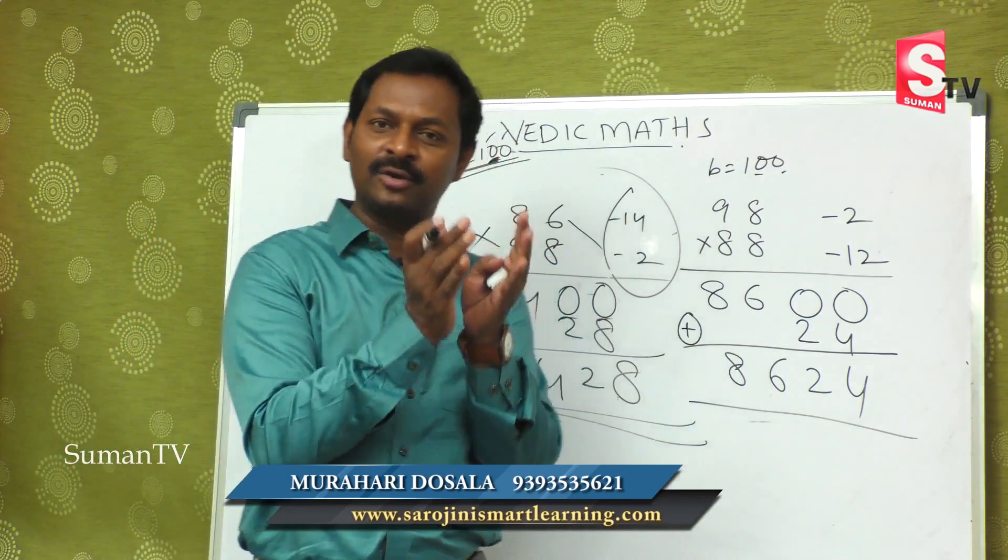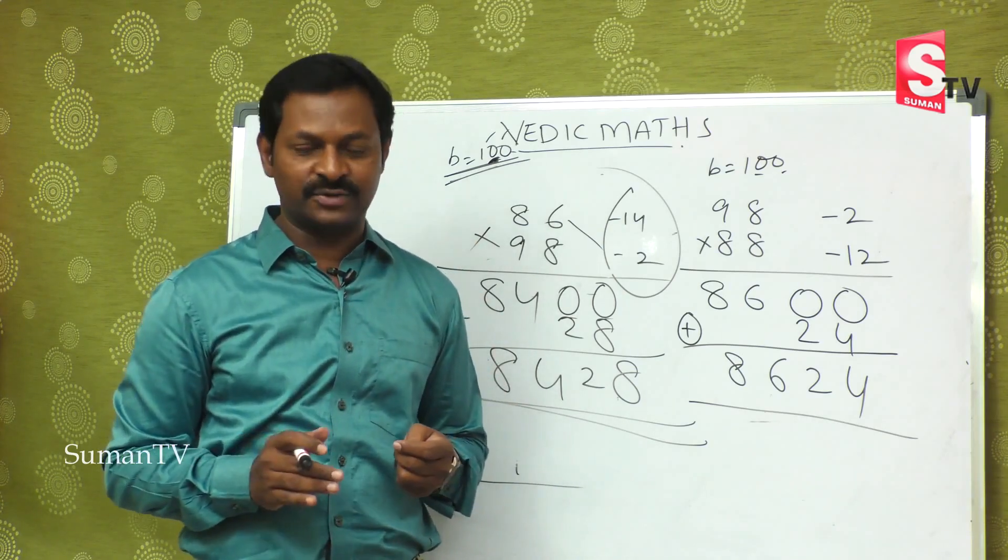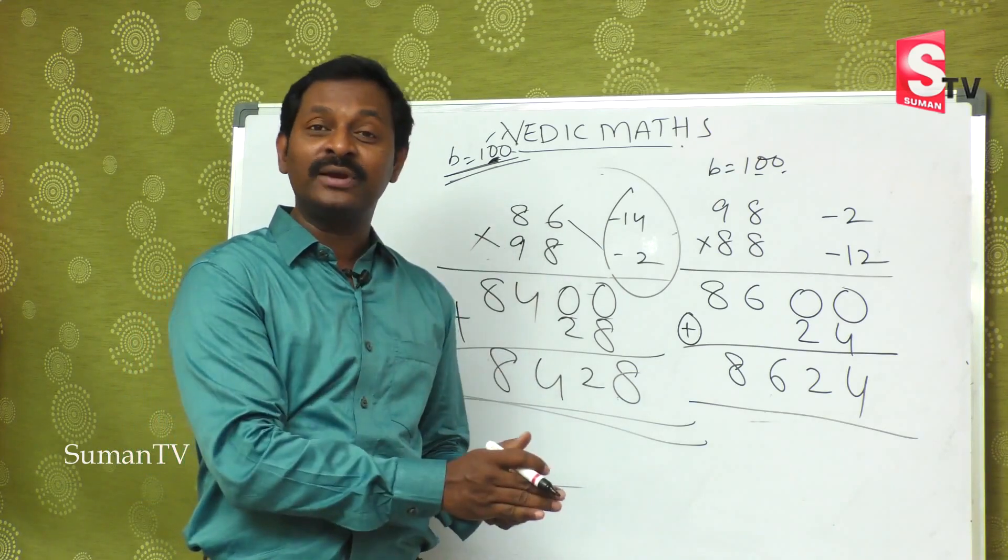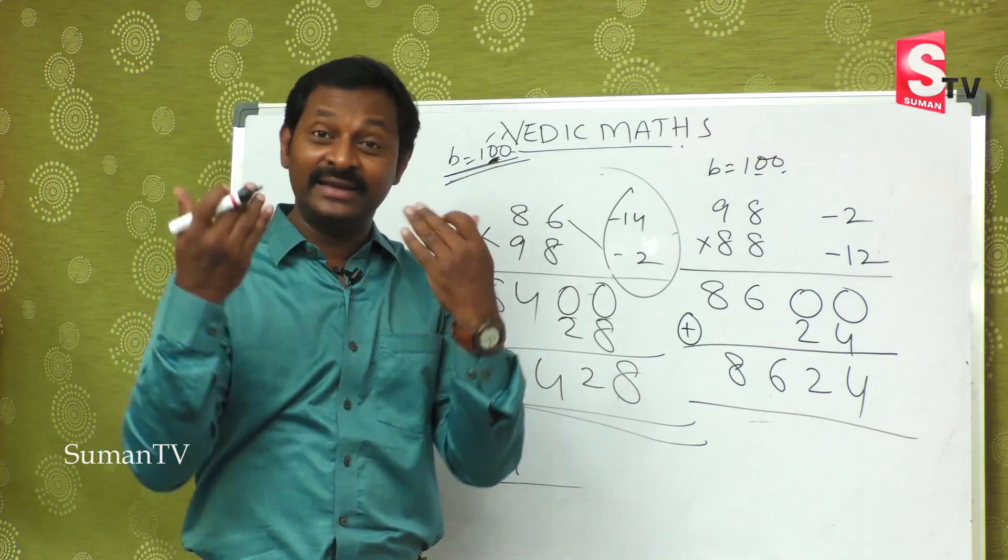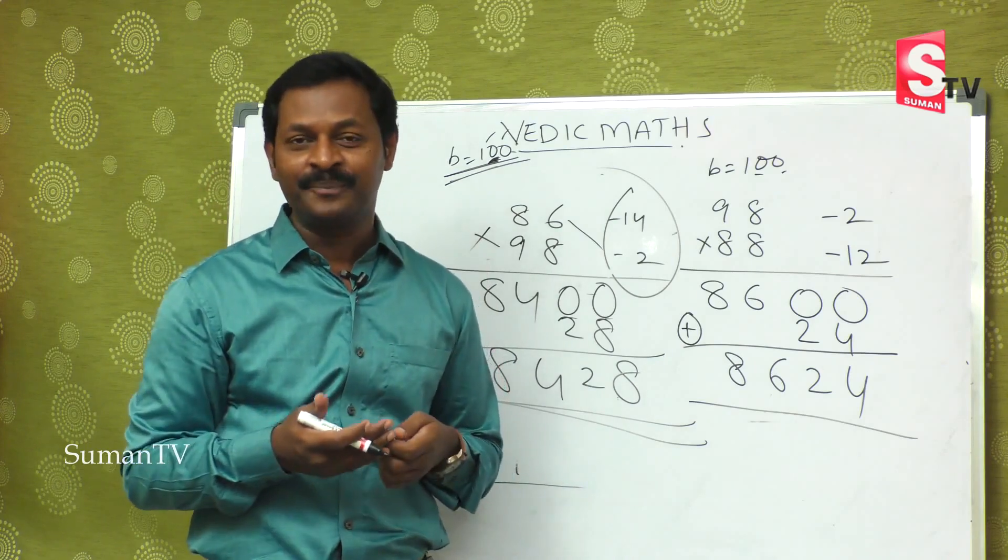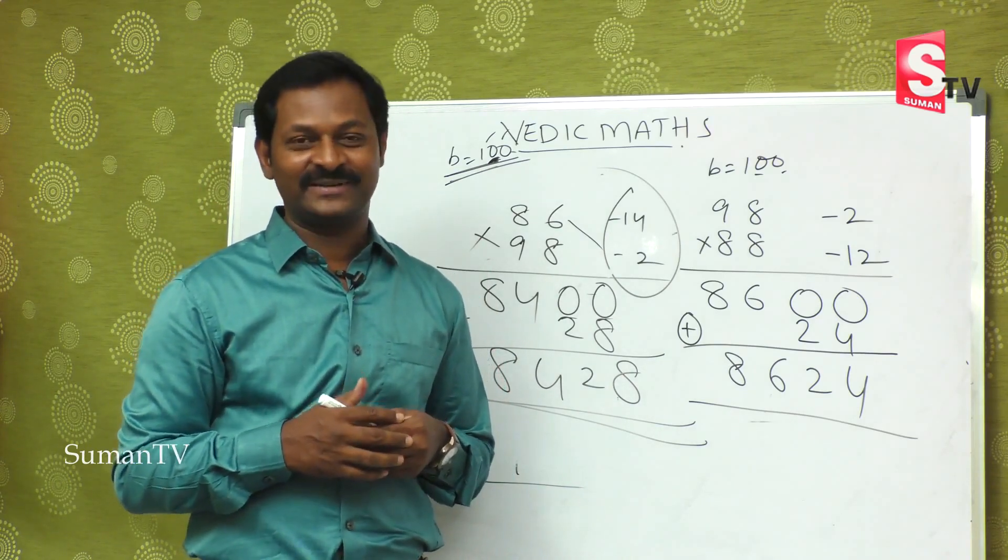Today we discussed close to 10 numbers, close to 100 numbers. That is, if you are close to 10 and 100, we discussed these methods. In the coming episodes, we will discuss more. I hope you have understood this class. Thanks for watching. Bye bye.